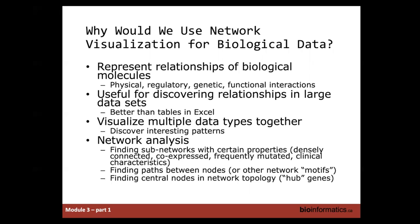Another thing networks do very well, as demonstrated in the previous picture, is that you can integrate lots of different data. In the previous network, there were proteins from different organisms shown with different shapes and colors, as well as annotation data, complex data, and the actual interaction data. Networks are very good at integrating different types of data.